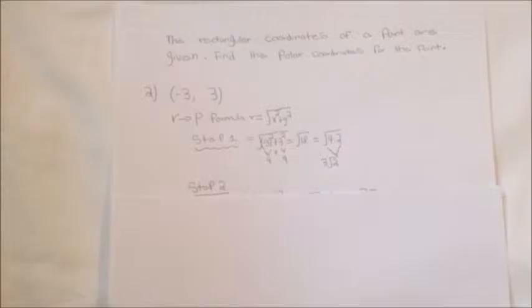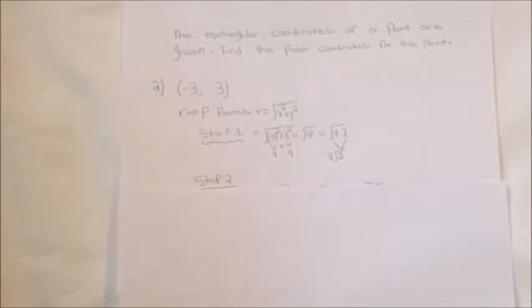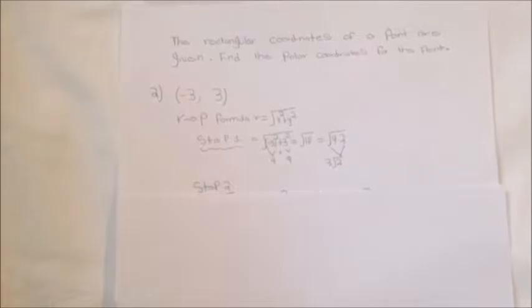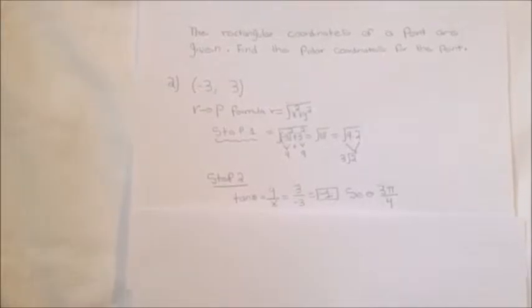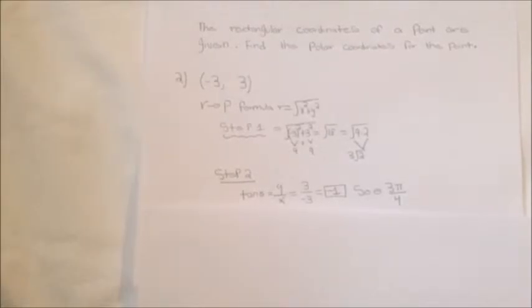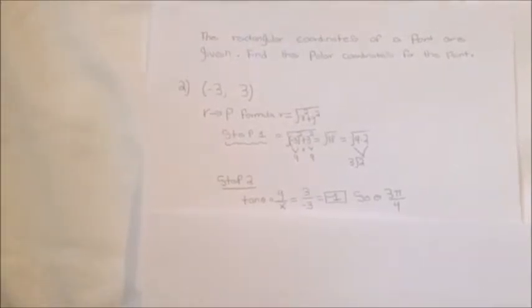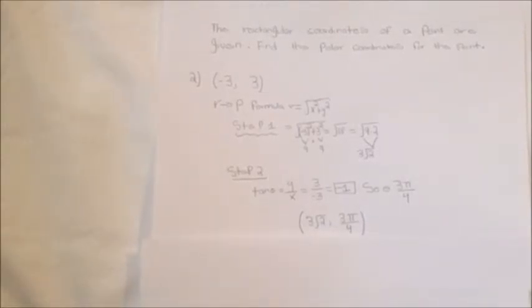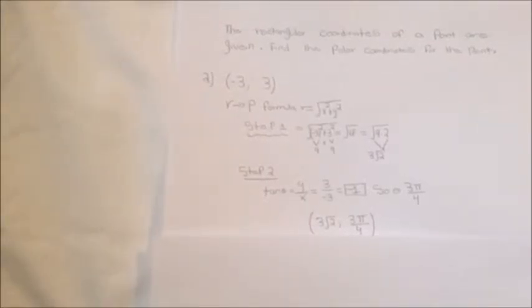Step 2 is to find theta. The formula to find theta is arctan(y over x). Our y is 3 and x is negative 3; 3 divided by negative 3 is negative 1. So theta is 3π over 4, which gives our answer: 3 square root of 2 comma 3π over 4.